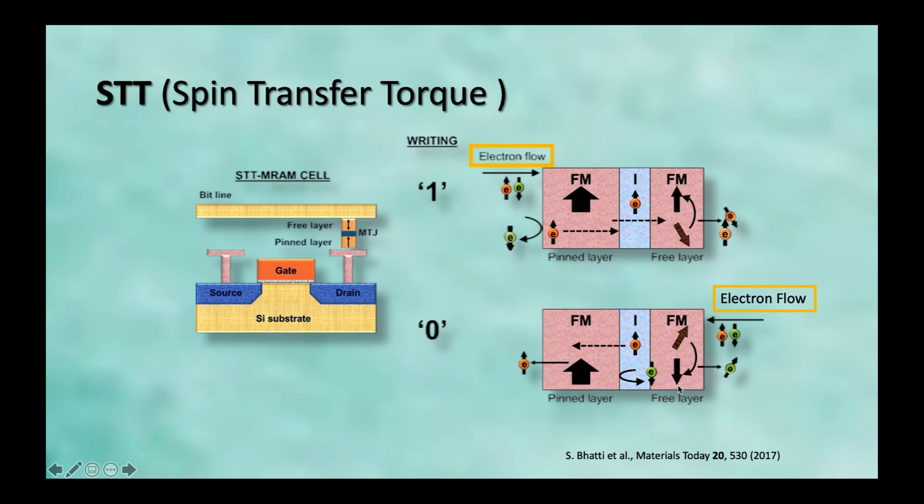And, similarly, if we want to achieve the configuration from parallel to anti-parallel as shown in this figure, we pass the current through free layer. So, the free layer will let the majority electron pass and the minority electron will reflect back from the interface of this pinned layer. And, when they reflect back, minority electrons will transfer their momentum to this magnetization of free layer and will rotate the magnetization to down.